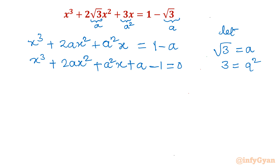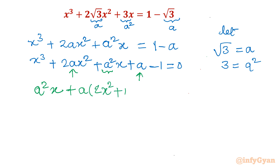If we write the same equation in terms of a, it would be quadratic, since the maximum power of a is a². Rearranging in quadratic form: a²·x + a·(2x² + 1) + (x³ − 1) = 0, where x is coefficient A, (2x² + 1) is B, and (x³ − 1) is the constant term C.